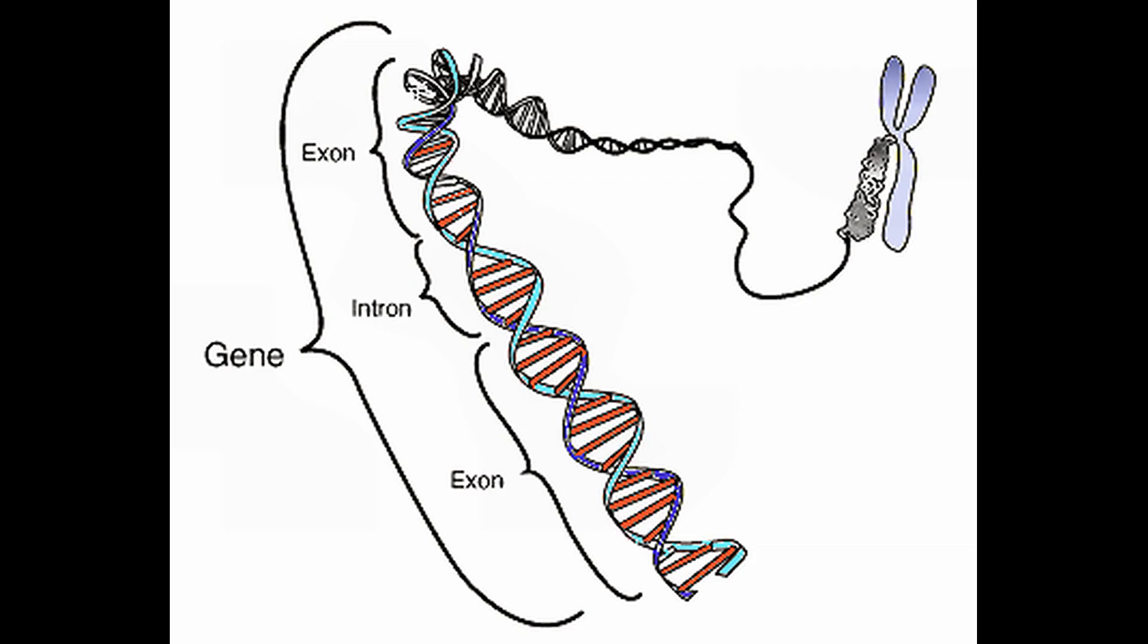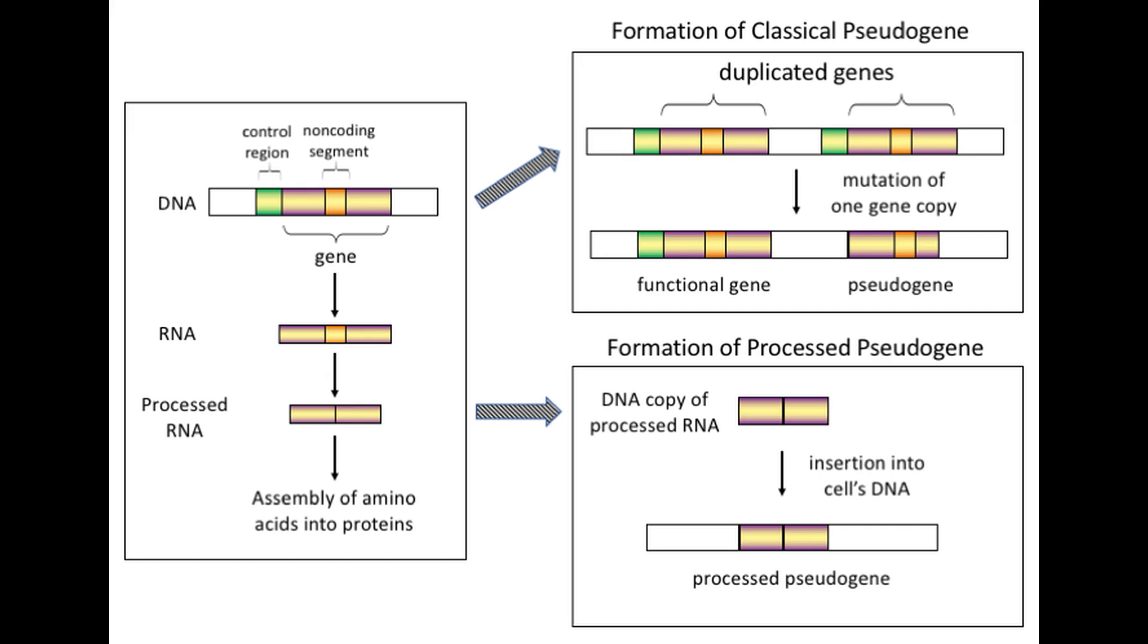Back to the nitrogenous bases. When their sequence codes for a molecular product that has some function, they're known as genes. Some genes code for proteins, some only produce RNA such as transfer RNA genes, and others have lost their original protein and or RNA coding functions, or they no longer have any function at all. These are known as pseudogenes.